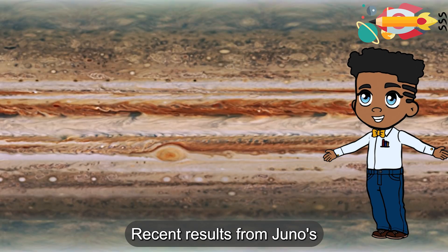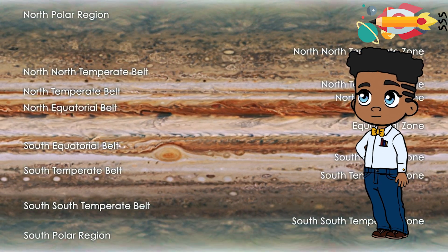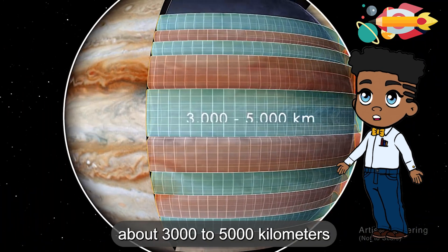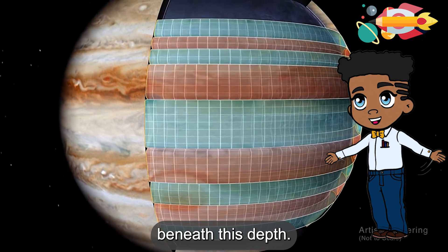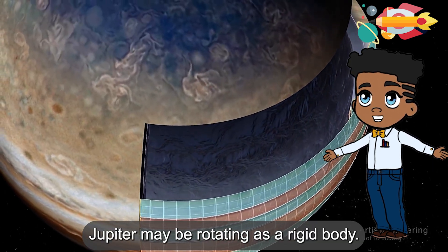Recent results from Juno's gravity experiment show that Jupiter's iconic belts and zones rotate as a series of cylinders down to depths of about 3,000 to 5,000 kilometers. Beneath this depth, it appears that Jupiter may be rotating as a rigid body.